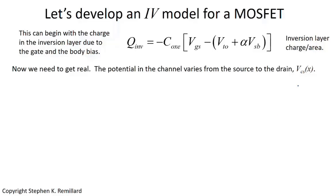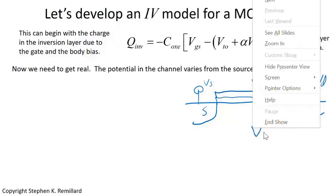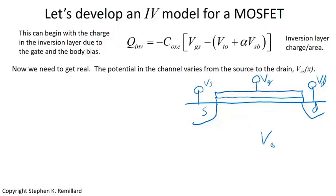Let's begin with a picture. Your measurement of the gate-source voltage will depend on where you are in the channel. We draw the MOSFET with the source, the drain, the oxide layer, and the metallic gate. There's a gate voltage V_G, a source voltage V_S, a drain voltage V_D, and a body voltage V_B. There's an inversion layer full of inversion charge, with thickness T_INV.